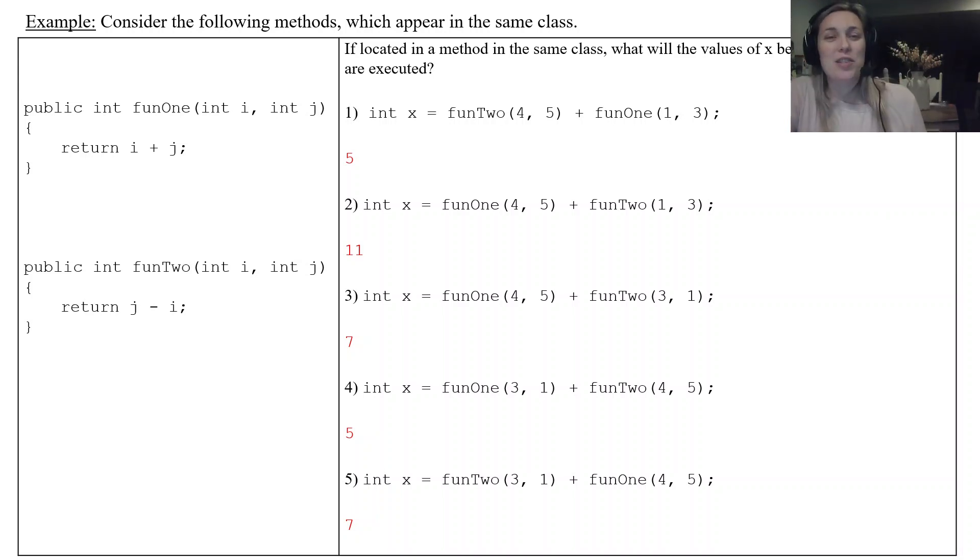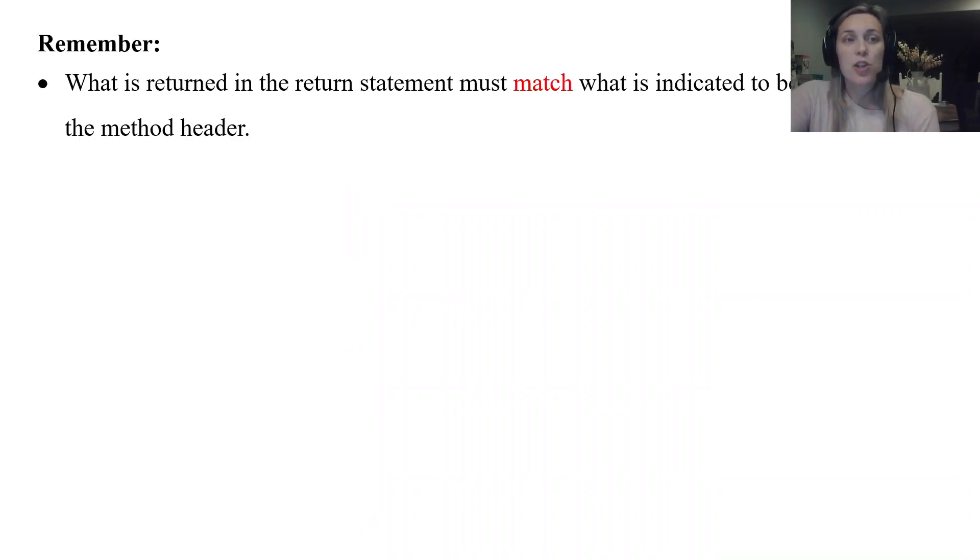Non-void method calls will return a value. So some things to remember before we wrap up the lesson here. What is in the return statement must match what is indicated to be returned. So if you say int in your method header that you're going to return an int, you have to return an int. If you try to return a string, but in your method header you say int, you're going to get a compiler error.